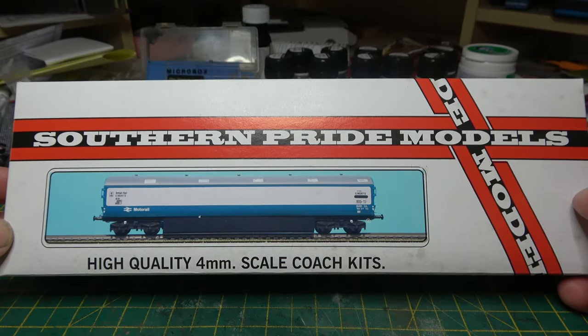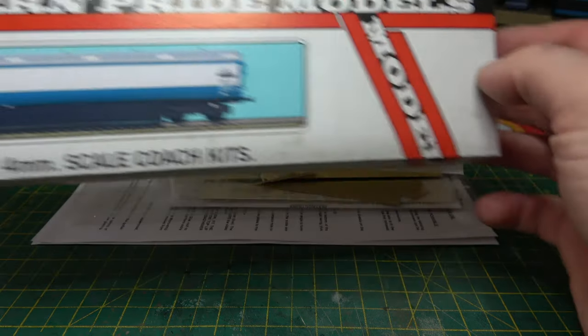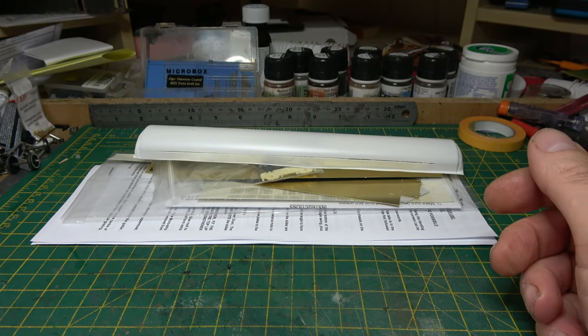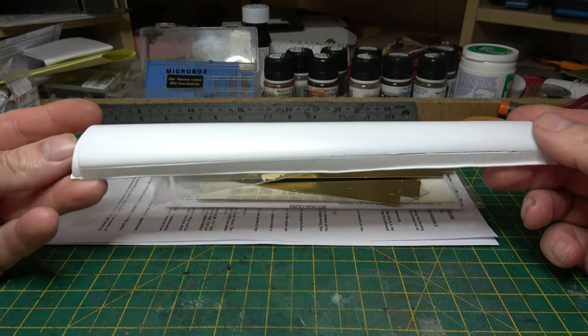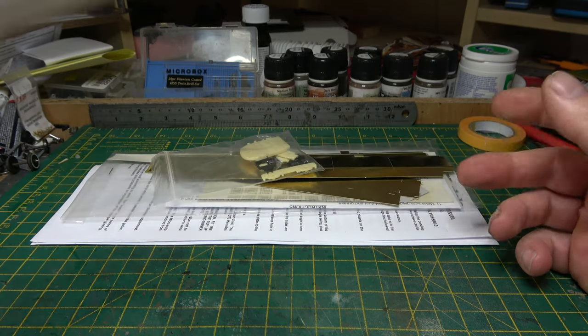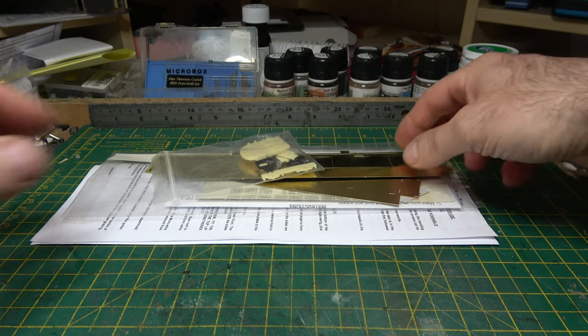Hello again, well this is the one that you voted for on my Facebook page, link in the description. It's the Newton and Chambers car carrier, a Southern Pride kit.